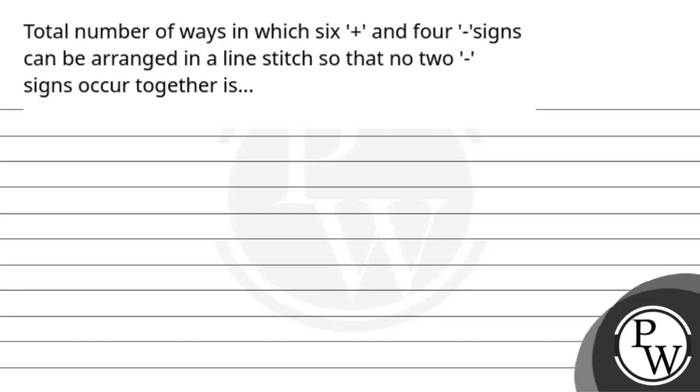Hello, Baccio. Let's read the question. The question says total number of ways in which 6 plus and 4 minus signs can be arranged in a line such so that no two negative signs occur together is.